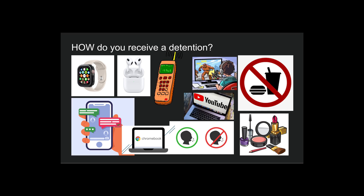So how do you receive a detention? Looking at your smartwatch, walking into class with your earbuds in, using your cell phone, playing video games in class — these are all things I saw last year. Watching YouTube when you're allowed to use your Chromebook, having your Chromebook out when I didn't allow it, texting in class, talking when you're not supposed to, putting on makeup, or eating in class.